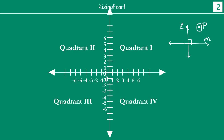So if you have to describe a point, the location of point P will be expressed in reference to these two lines, L and M. We draw two straight lines — basically two number lines. One we call the X axis. This is our X axis.